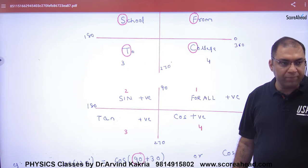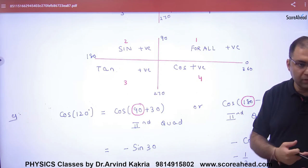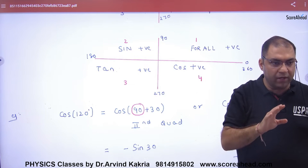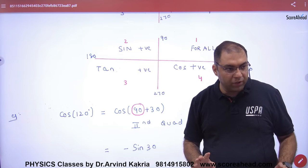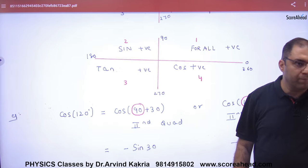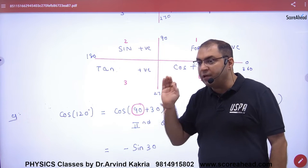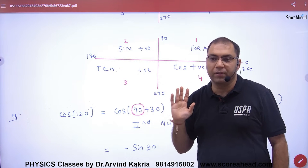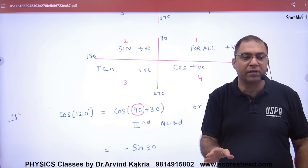If you have any angle between 90 and 180, like 120 degrees, that falls in the second quadrant. In the second quadrant, sin is positive. So sin 120 will give a positive answer, but cos 120 and tan 120 will give negative answers.